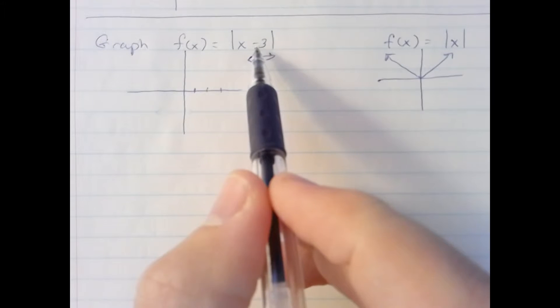However, the minus 3 is misleading because we actually shift 3 units to the right.